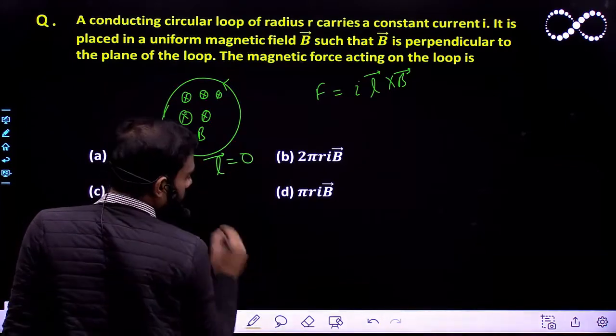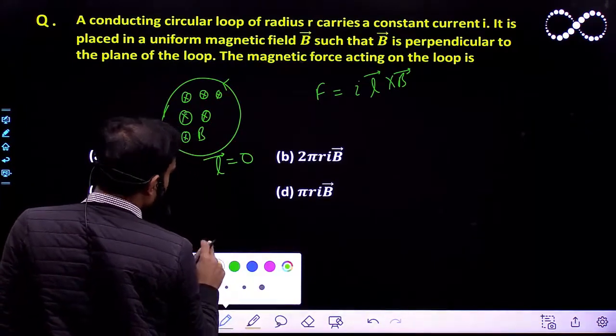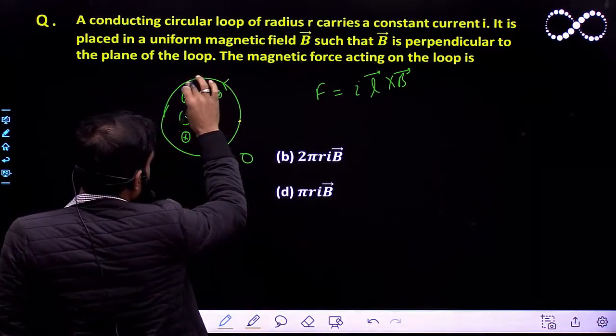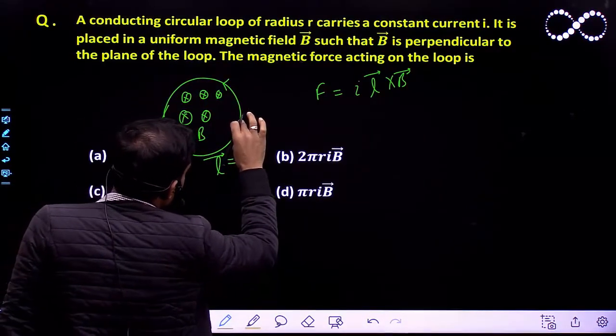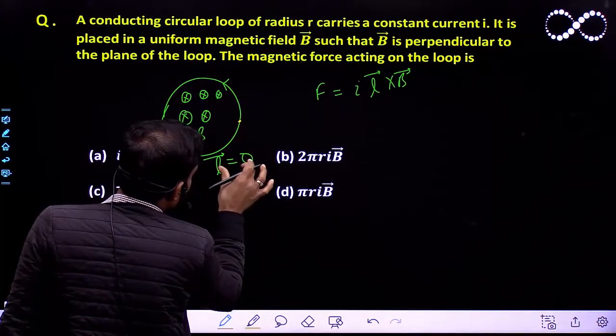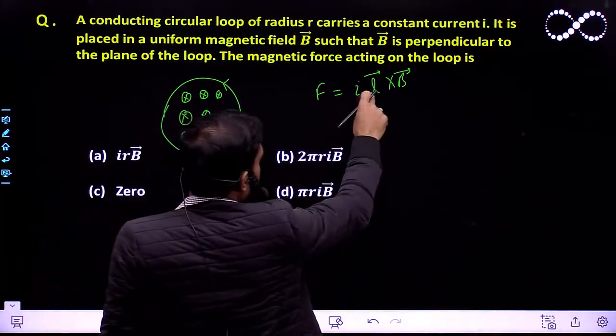Because the reason being is, suppose I take any point from this point the loop has started and it ends at this point only. So the total current element L vector will become 0. So since the L vector is 0 here, I will say the force is equal to 0.